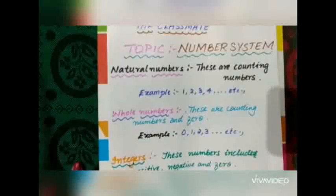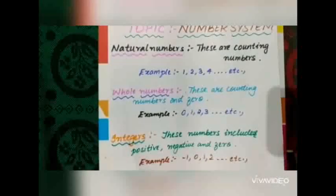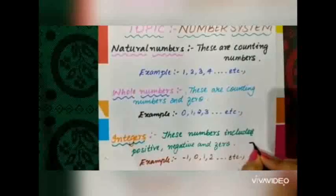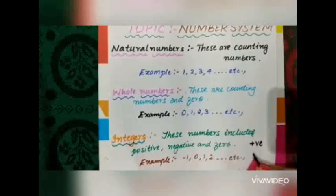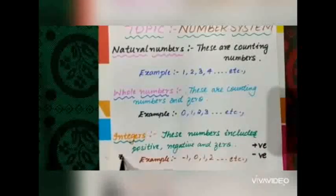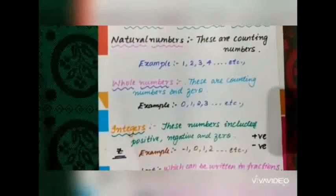Next is whole numbers. These include counting numbers and 0. So examples are 0, 1, 2, 3, etc. Next is integers. These include the positive numbers, negative numbers, and 0. The positive numbers, negative numbers, and integers are represented by their respective symbols. Integers are represented by the symbol Z.